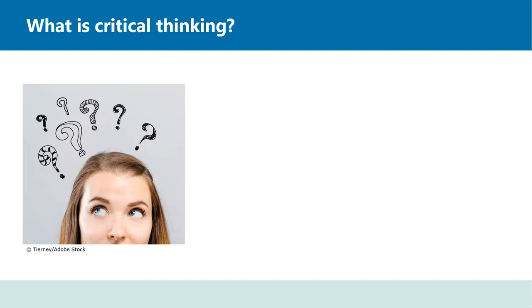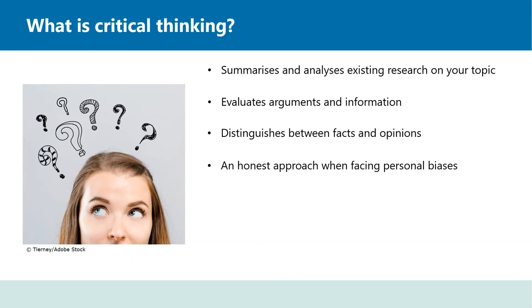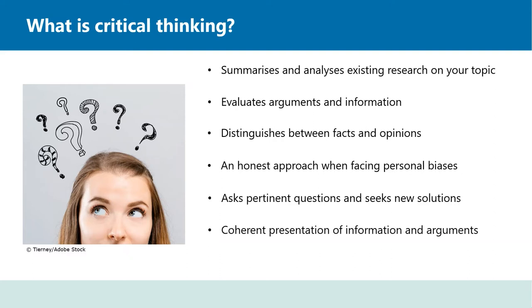Let's first look at what is commonly understood by critical thinking. Critical thinking is the analytical thinking that underlies all rational discourse — in other words, using reason or logic in thinking about a problem. It is about evaluating and analysing existing research on your topic, evaluating arguments and information, distinguishing between facts and opinions, seeking an honest approach when facing personal biases, asking pertinent questions and always seeking new and improved solutions to existing problems. This is what a critical thinker does — presenting information and arguments coherently, and evaluating your own thought processes.